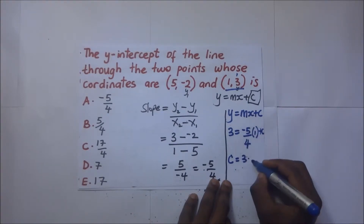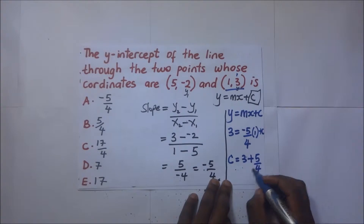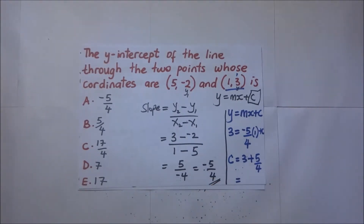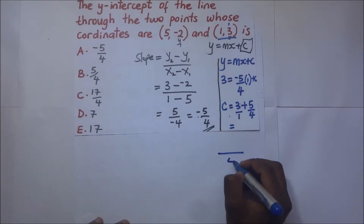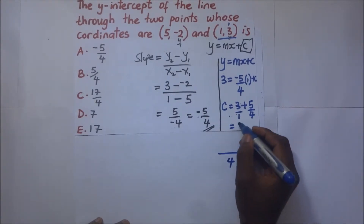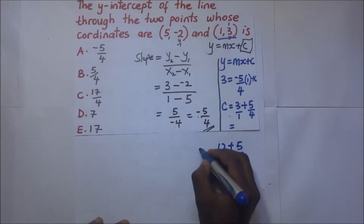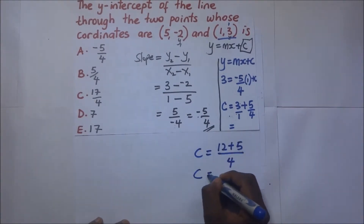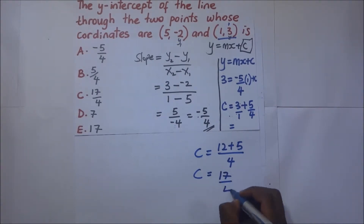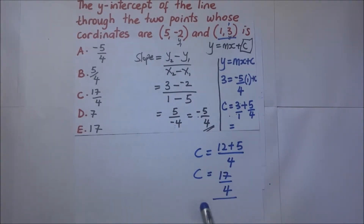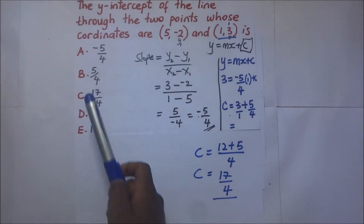Adding those two with a common denominator of 4, our value of c is 17 over 4. That is the y-intercept.